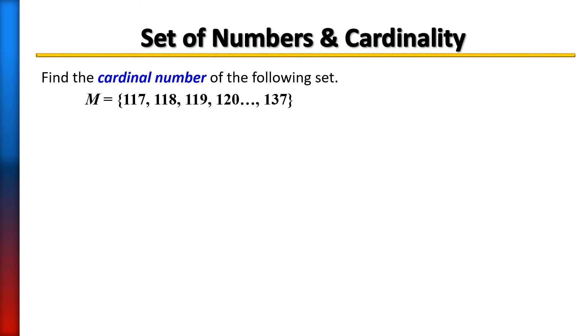So here's a case. Let's see, set M has 117, 118, 119, 120, so these are consecutive numbers, they follow one after another. And when that is the case, step one is just find the difference between the first and the last number. So take the first number and the last number that's given and subtract the two. Okay, that's as easy as it seems. Take the first, take the last number, subtract it. In this case I get 137 take away 117, which is 20.